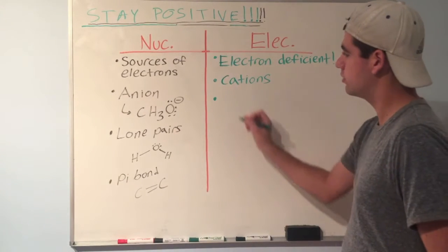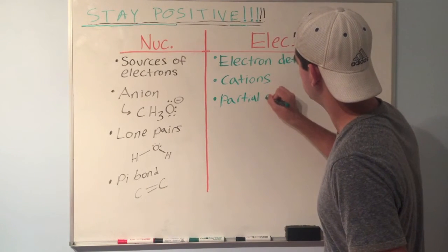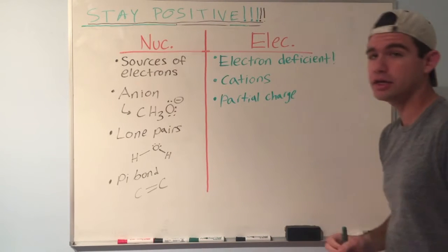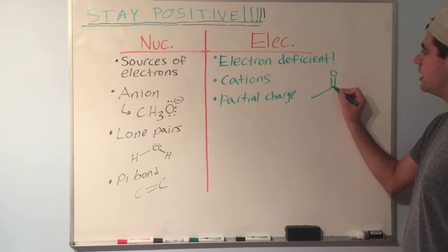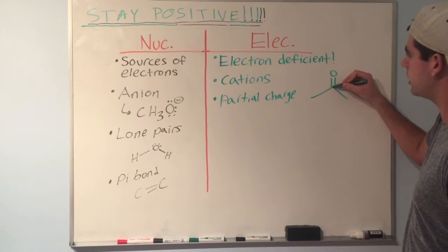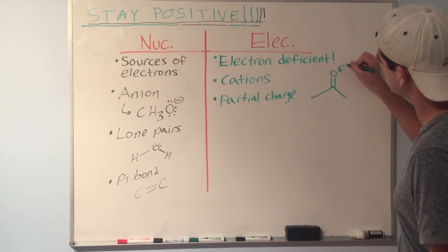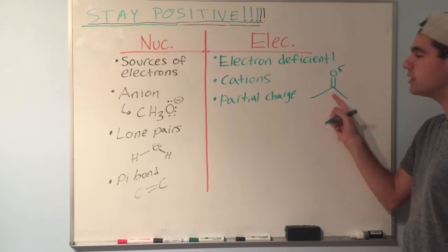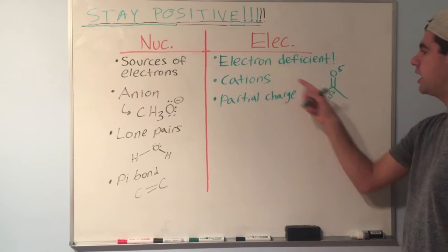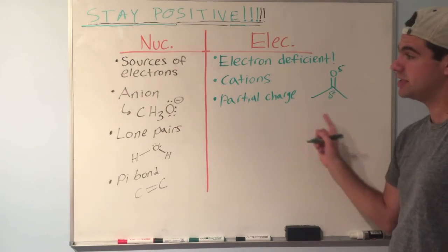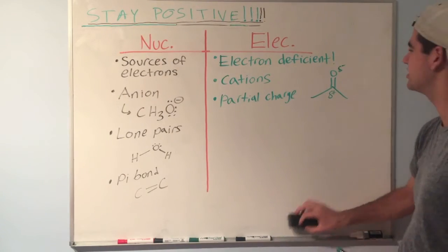And so something else that can be electrophilic is partial positives, partial positive charge. So if we look at a ketone, for example, which something like this. We see an electronegativity difference between this oxygen and this carbon right here. The oxygen is more electronegative, so the electrons are drawn towards it, giving it a partial negative charge. What does that give this carbon? It gives it a partial positive charge. So even though it's not fully positive like a cation, this partial positive charge does make it a subject for attack by a nucleophile. Because it's still positive, just not full positive.